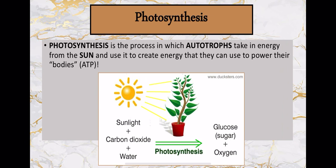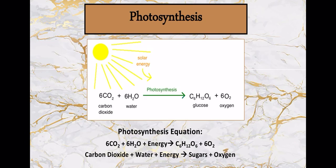Photosynthesis happens in autotrophs — you're taking in sun energy and using it to create ATP through the middleman, which is glucose sugar. Here's the equation for photosynthesis: plants need sunlight, carbon dioxide, and water. Put those together and you can generate glucose and oxygen as a byproduct. The equation for cellular respiration is actually the exact opposite of photosynthesis, which highlights the great relationship between autotrophs and heterotrophs. Autotrophs generate the things heterotrophs need, and vice versa — we breathe out CO₂ while plants take it in and generate the oxygen we breathe.